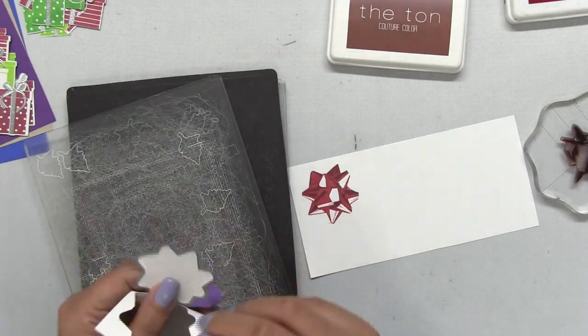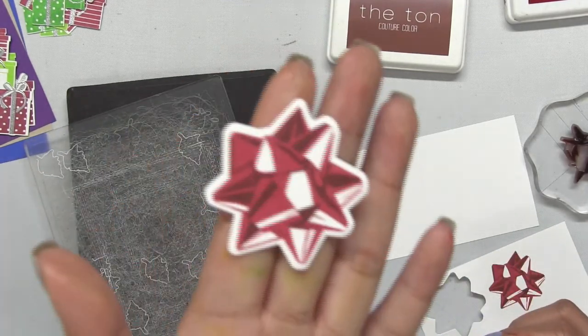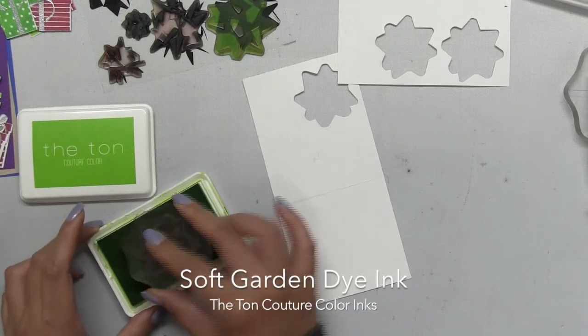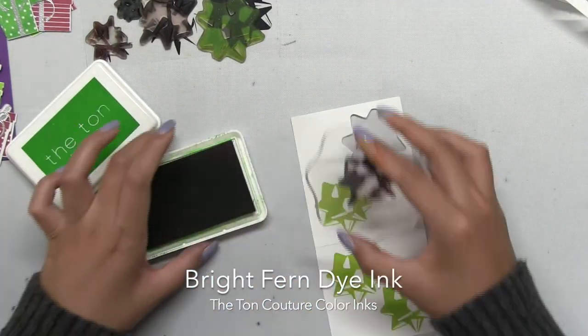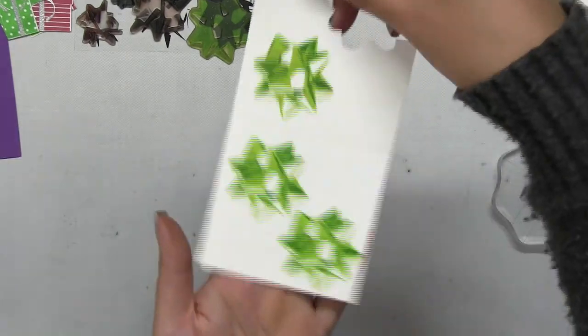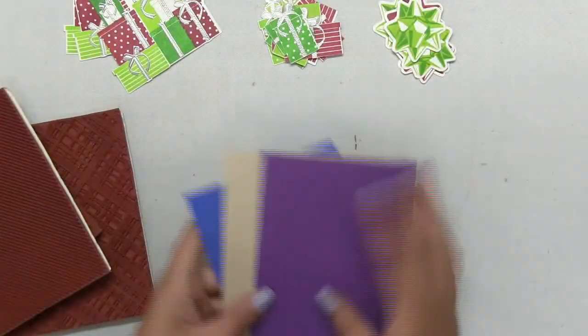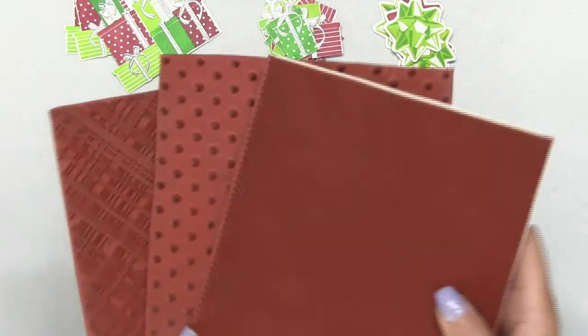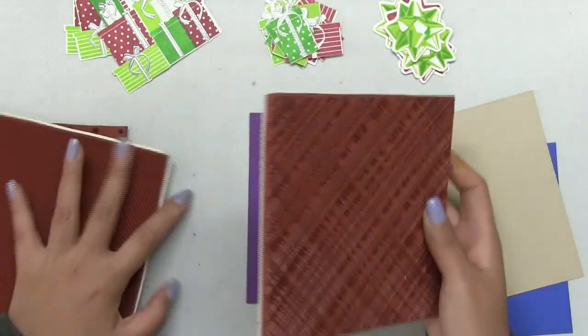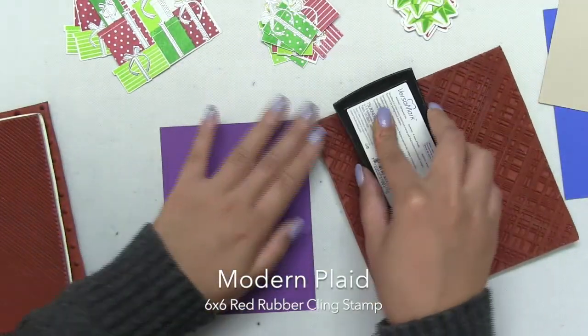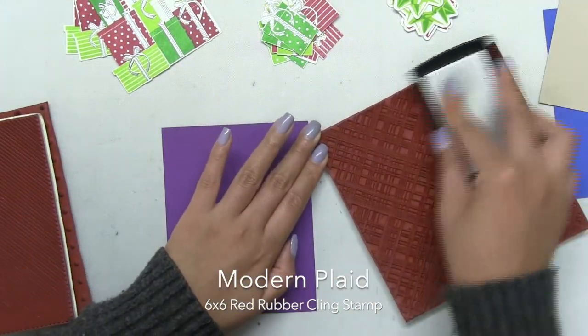I stamped out three and then I die cut each of them using their coordinating dies. I also stamped out three more in green but I ended up not using the green. Now I have some A2 panels that I'm going to do some clear heat embossing with using three of our 6x6 rubber cling stamps.